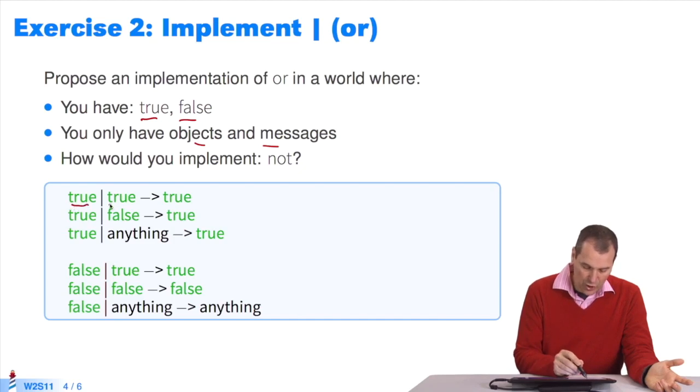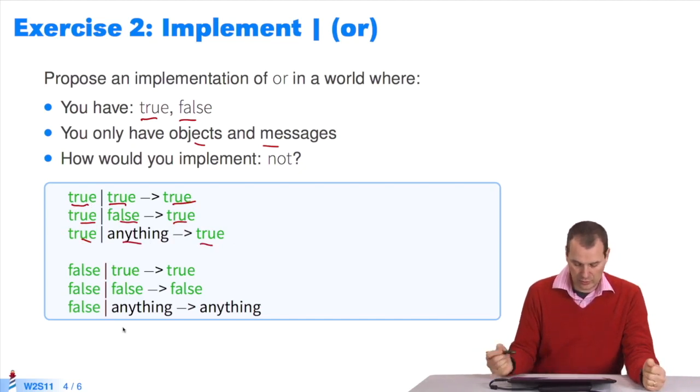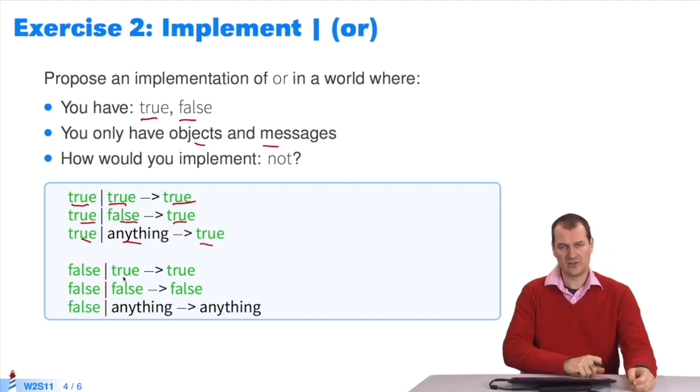You have TRUE pipe TRUE returns TRUE. TRUE pipe FALSE returns TRUE. TRUE pipe anything returns TRUE. It's the same with FALSE. How to implement this?